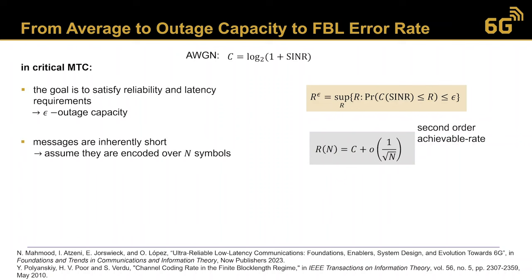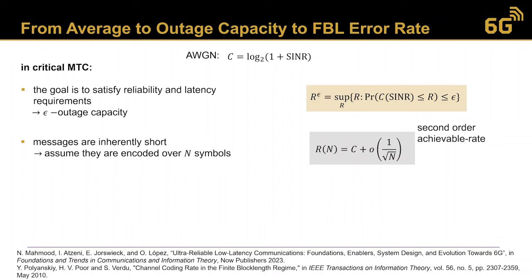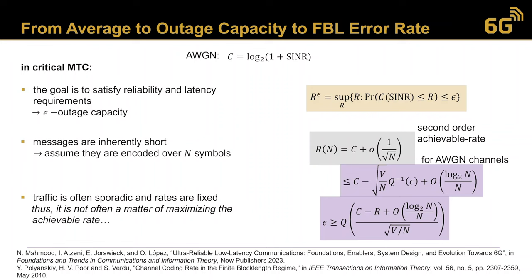Another reason is that messages are inherently short. If we assume the message comprises N symbols, the rate can be formulated as a second-order achievable rate that depends on the block length N. For AWGN channels we have a bound dependent on channel dispersion V and target error rate epsilon. Additionally, traffic is often sporadic and rates are fixed, so it is often not a matter of maximizing the achievable rate, but of meeting a given error probability requirement at the given system rate.